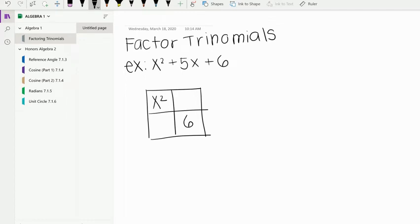From there we're going to go to our diamond, or magic x, and we find the product of the diagonal. So x squared times 6 would be 6x squared. And for the bottom we take our middle term, which is 5x.